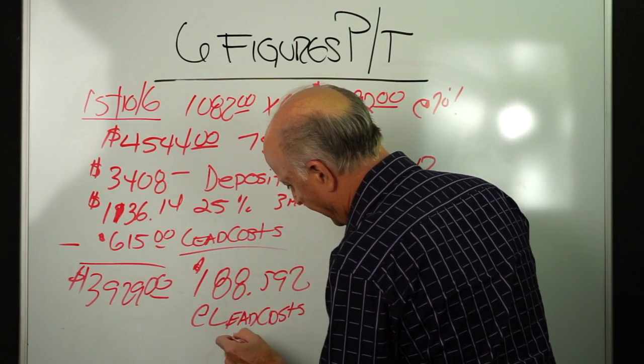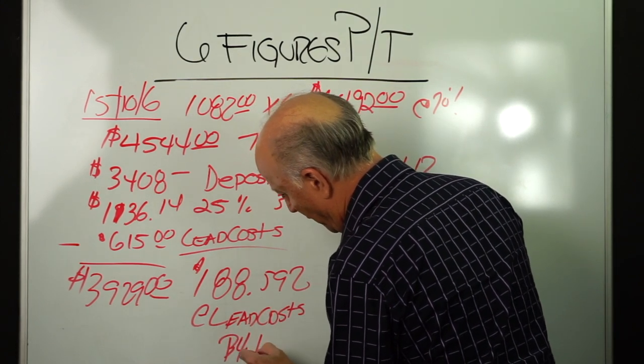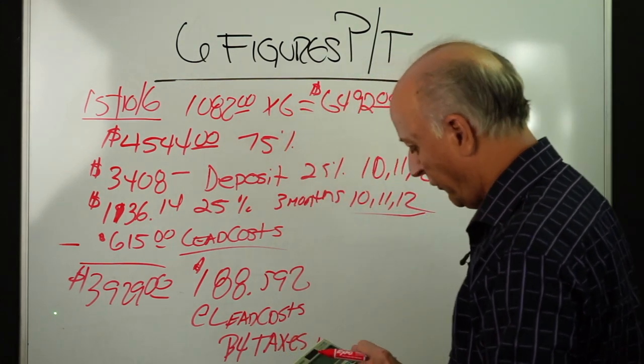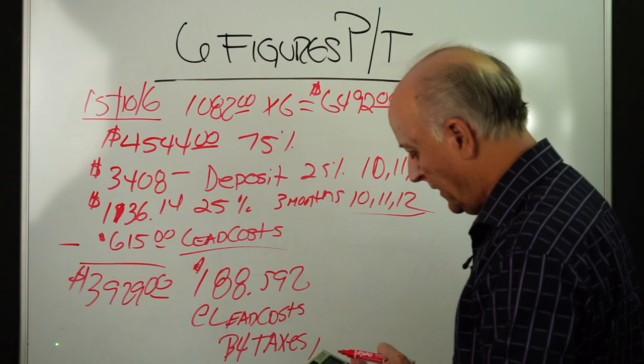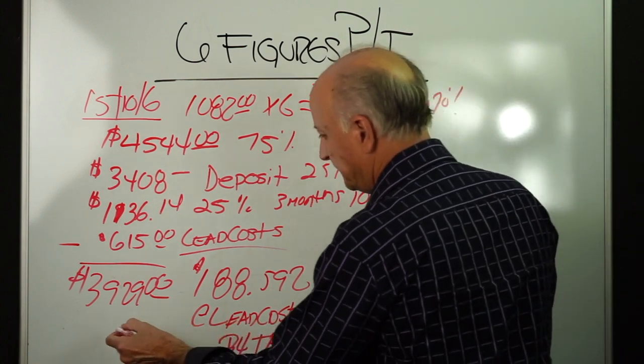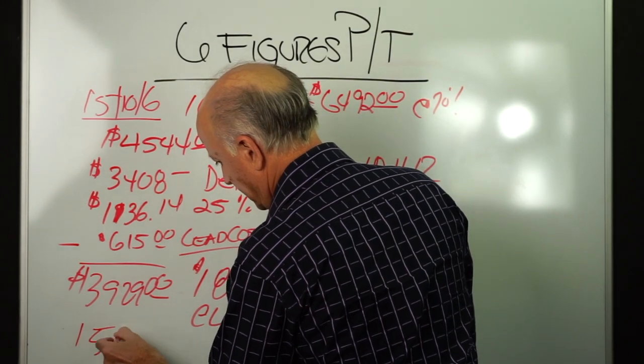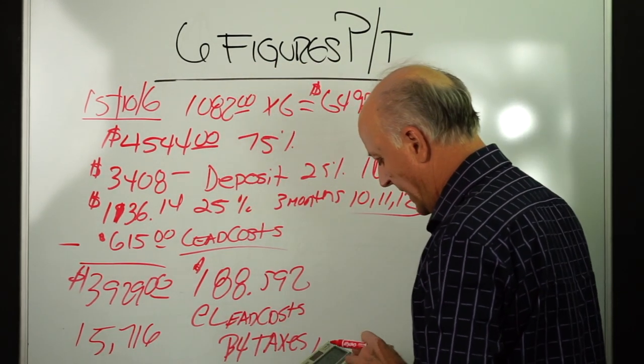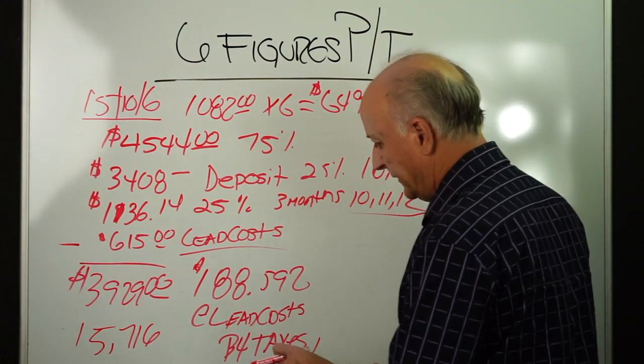But for all of you that are thinking, it is before taxes and gas and all those other things. So $3,929 times 4 is $15,000.